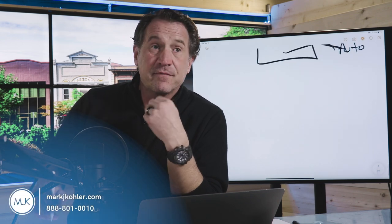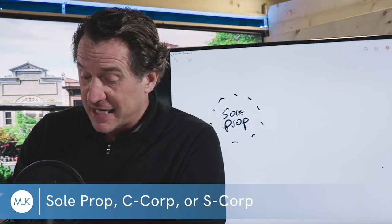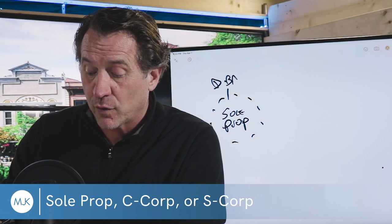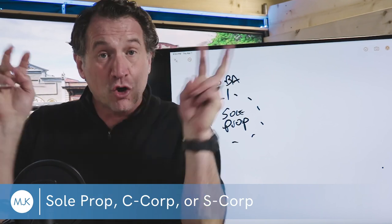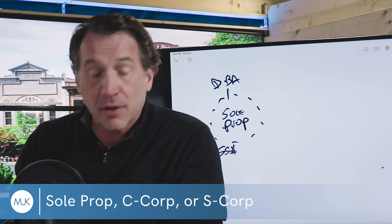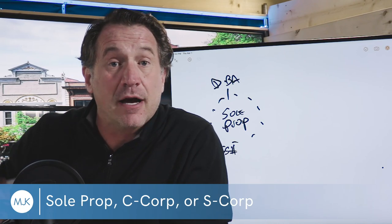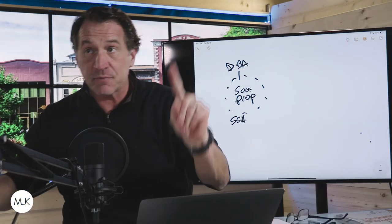All right. Tom asks a very important question. Now, there's three ways to organize your business. Everybody check this out. You could be a sole proprietorship, no LLC. You're just a DBA. That stands for doing business as. You reserve your little name, you take your social security number, and you go down to the bank and get a bank account. Boom. You're in business. That's option one.